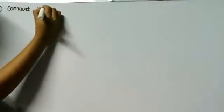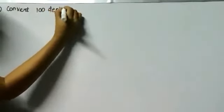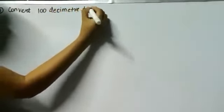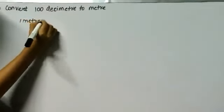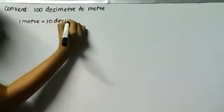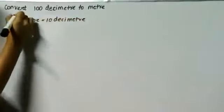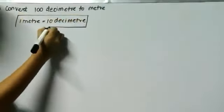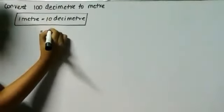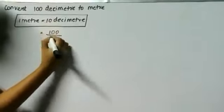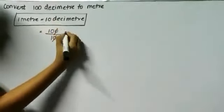Let's look at a few example sums based on multiples and submultiples of SI units. The first sum: convert 100 decimeters to meters. You divide the value 100 by 10. When we cancel out the zero, you get 10 meters. This is the answer for the first sum.